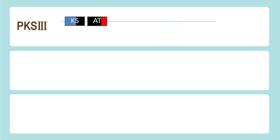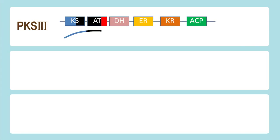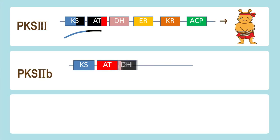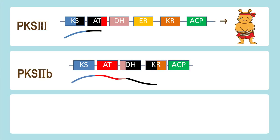We studied the function of the three genes by disrupting each gene with a selectable marker. When the selectable marker interrupts the DNA strand, the translated protein becomes truncated and non-functional.